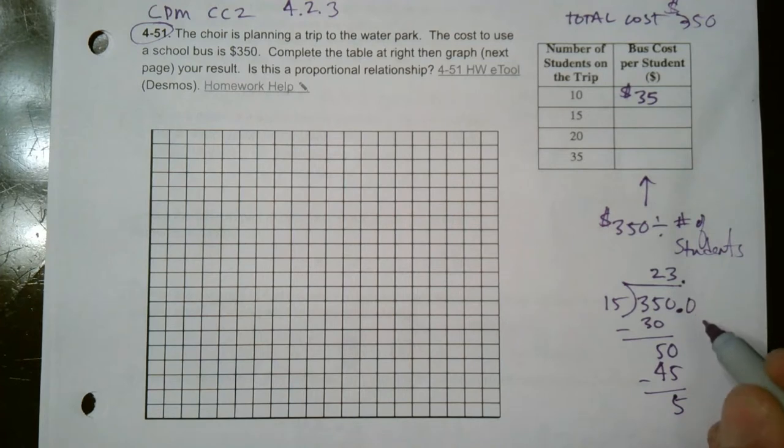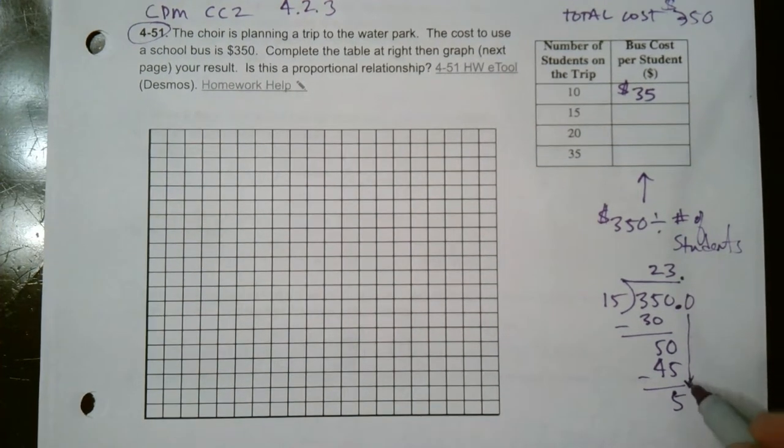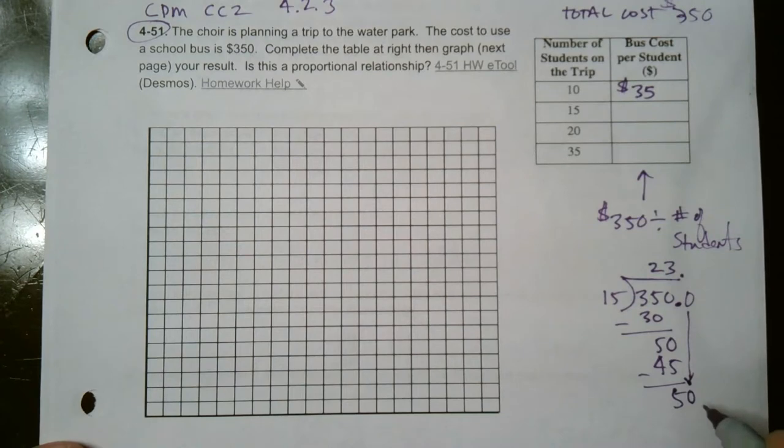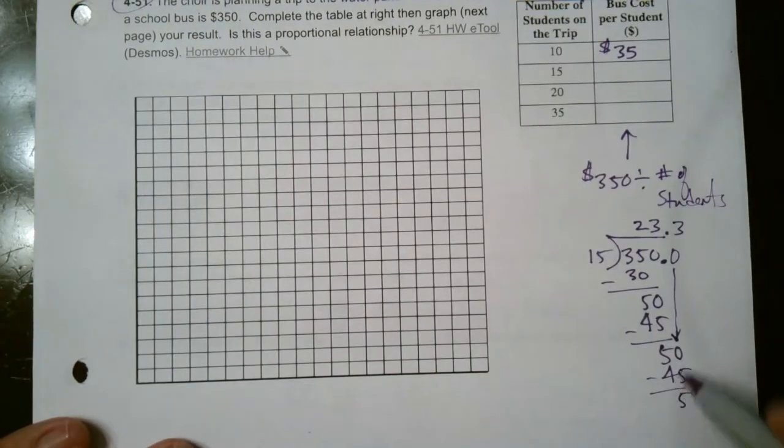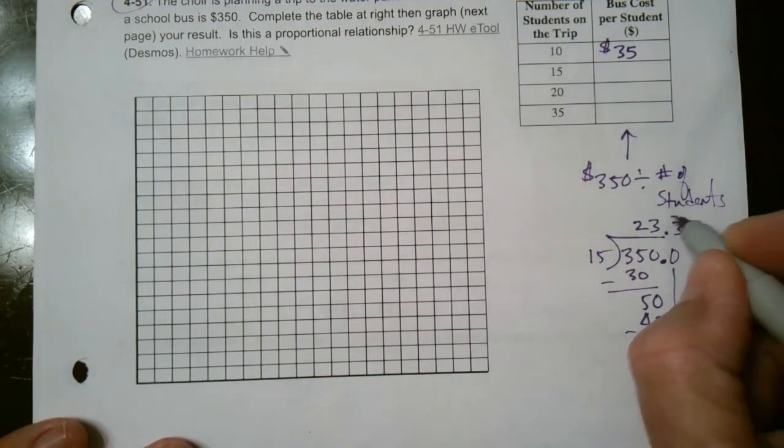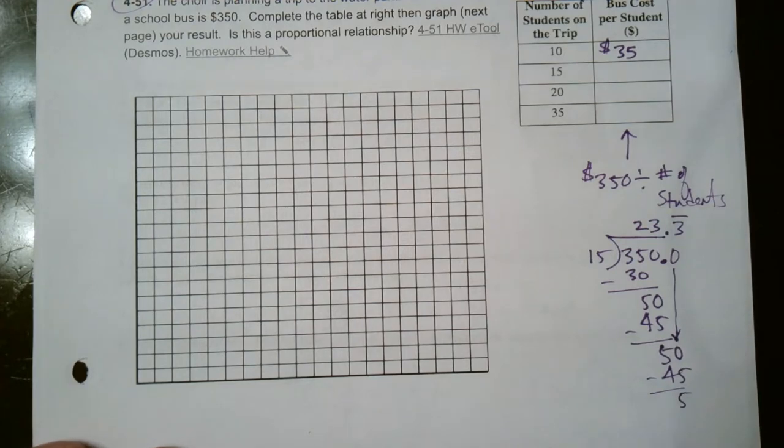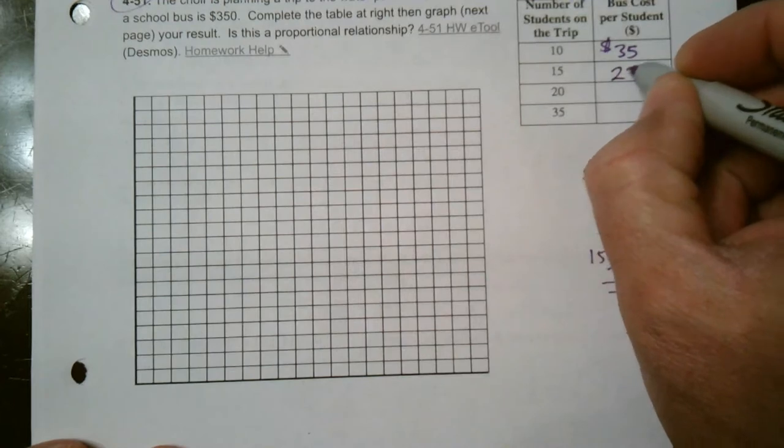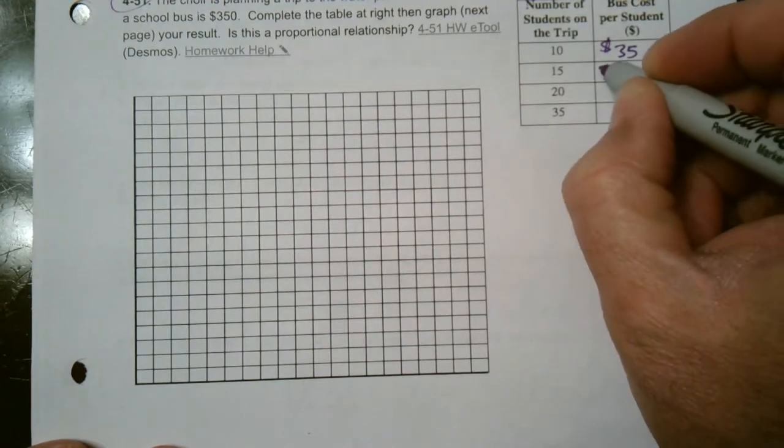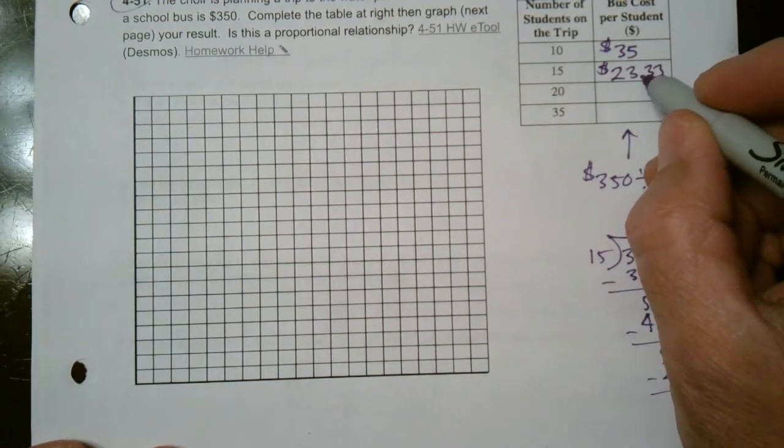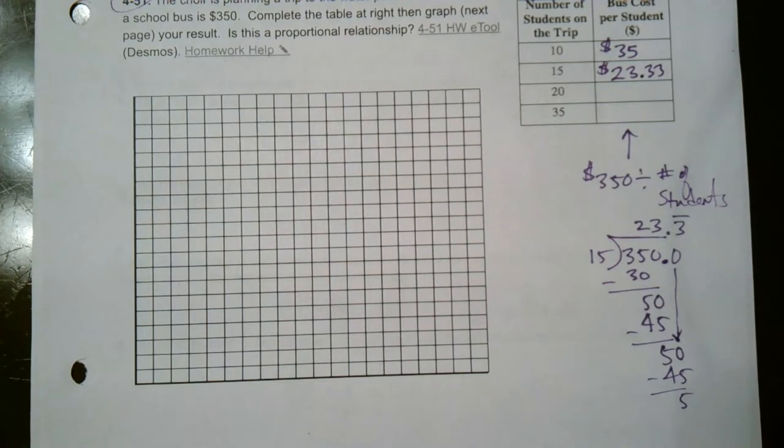If I bring down, I had to add a 0. Bring down, add a decimal. Bring down the 0, I get 50 again. So what's going to happen? I'm going to keep getting this 3 times 15 to get 45. And I'm going to continue to get a remainder of 5. So it'll be this 3 repeating. So we're going to put that in terms of money, it would be $23.33. If I have a repeating 3, if I'm putting in money, there I have it.